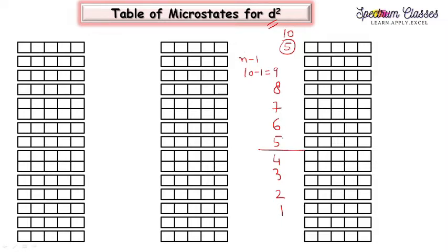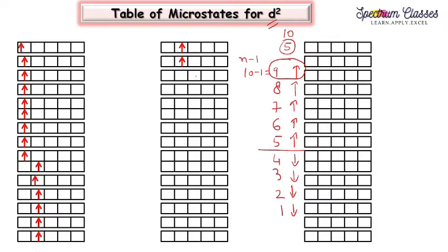Up to the half occupancy mark we go with up spins, and after half occupancy we move with down spins, then arrange the second electron. So in the first column we have 9 up spins, second column 8 up spins, third column 7, fourth column 6, fifth column 5 — all 5 columns filled with up spins up to half occupancy. After this, from the first column we move with down spins: 4 down spins, then 3, then 2, then 1 down spin.